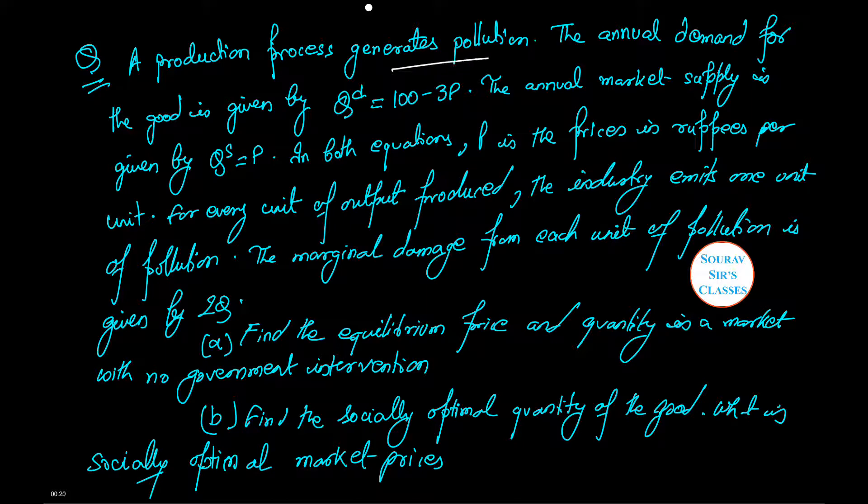A production process generates pollution. The annual demand for the good is given as QD equals 100 minus 3P. The annual market supply is given by QS equals P. In both equations, P is the price in rupees per unit. For every unit of output produced, the industry emits one unit of pollution.